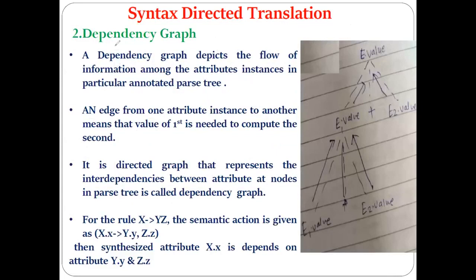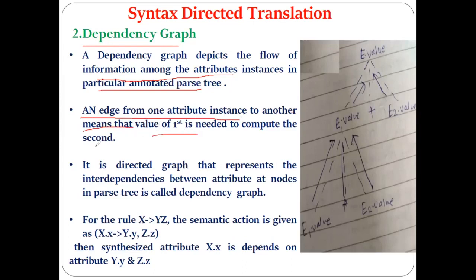The second point we are going to discuss is the dependency graph. The dependency graph is a simple concept. Its main purpose is to show the flow of information among the attribute instances in a particular annotated parse tree. An edge from one attribute instance to another means that the value of the first is needed to compute the second.